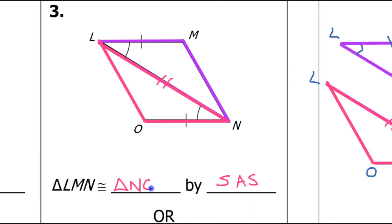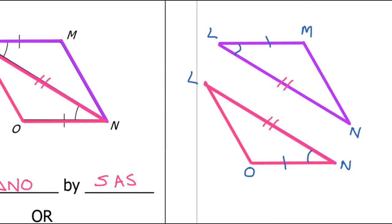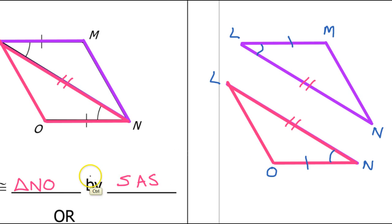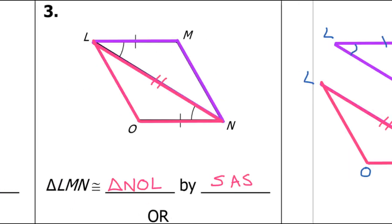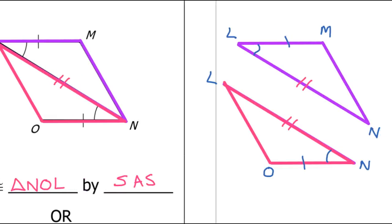In the first triangle, angle L corresponds with angle N in the second triangle. So when I make my second triangle listed in the congruent statement, where angle L is, I'm going to put angle N because those are corresponding. Angle M corresponds with angle O. That leaves angle N of the first corresponding to angle L of the second. So it's triangle LMN congruent to triangle NOL. A lot of students would have written that backwards — sometimes drawing the triangles separately makes it easier to see that L does not correspond to L, and N does not correspond to N.